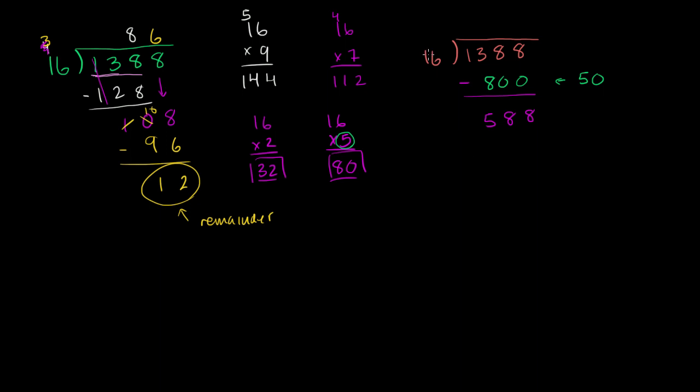And now we ask ourselves, how many times does 16 go into 588? How close can we get to that? 800 would once again be too big. Let's just go with 320 right over here. We know that 16 times 2 is 32, so 16 times 20 is going to be 320. I just multiplied the 2 times 10. And so we can subtract this right over here. 8 minus 0 is 8, 8 minus 2 is 6, and 5 minus 3 is 2. So now I'm left with 268.